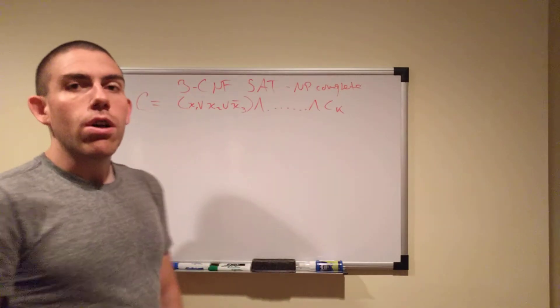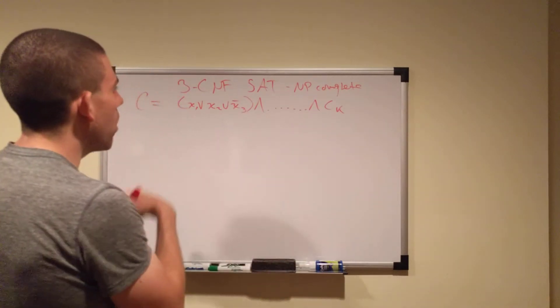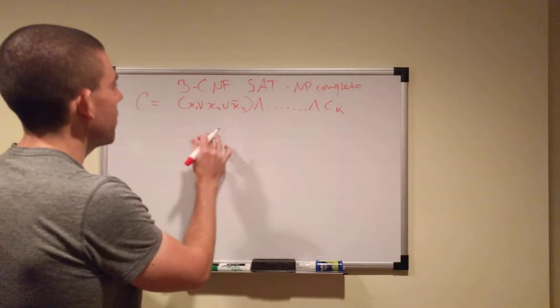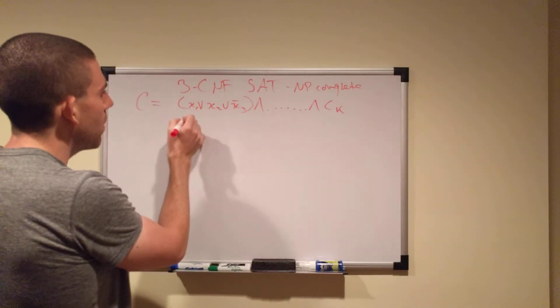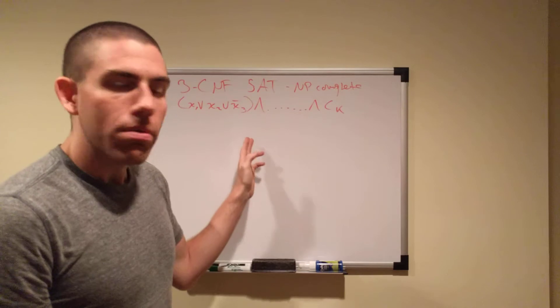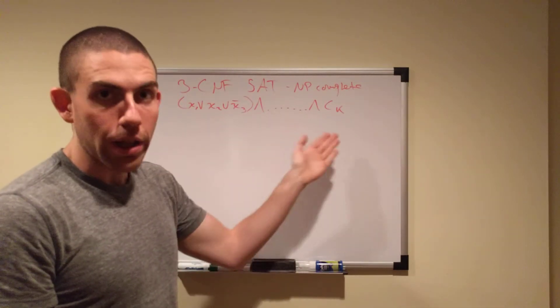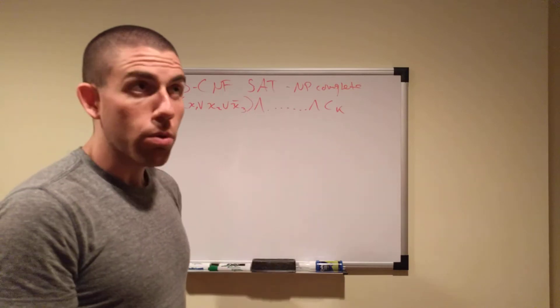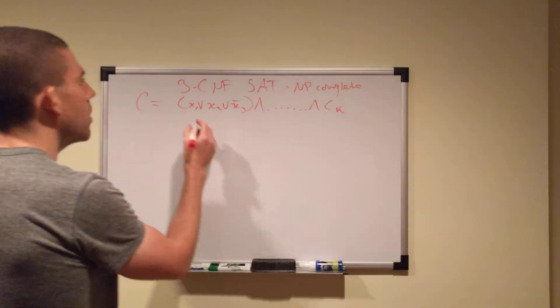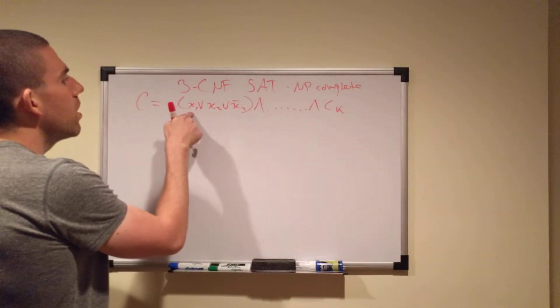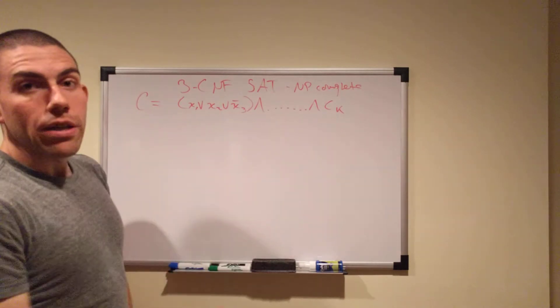So if you take just one of these clauses to start with, and you say, all right, this clause C1 has to evaluate to one in order for the whole thing to evaluate to true. And it's the same for everybody, they all have to evaluate to one, or at least one. So, we have three literals, because it's 3CNF.